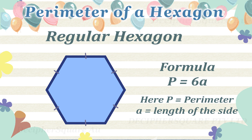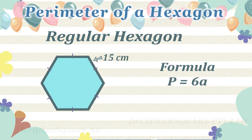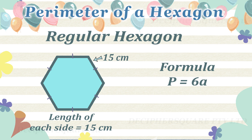Here is an example of the perimeter of a regular hexagon. This is a regular hexagon where the length of each side equals 15 cm. What is the perimeter of this hexagon? The formula for the perimeter of a regular hexagon is as follows.